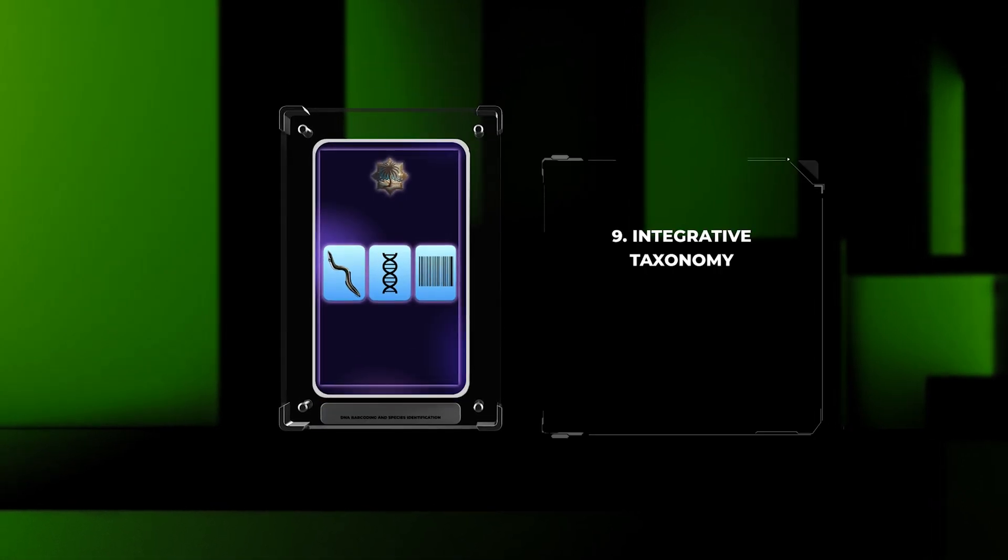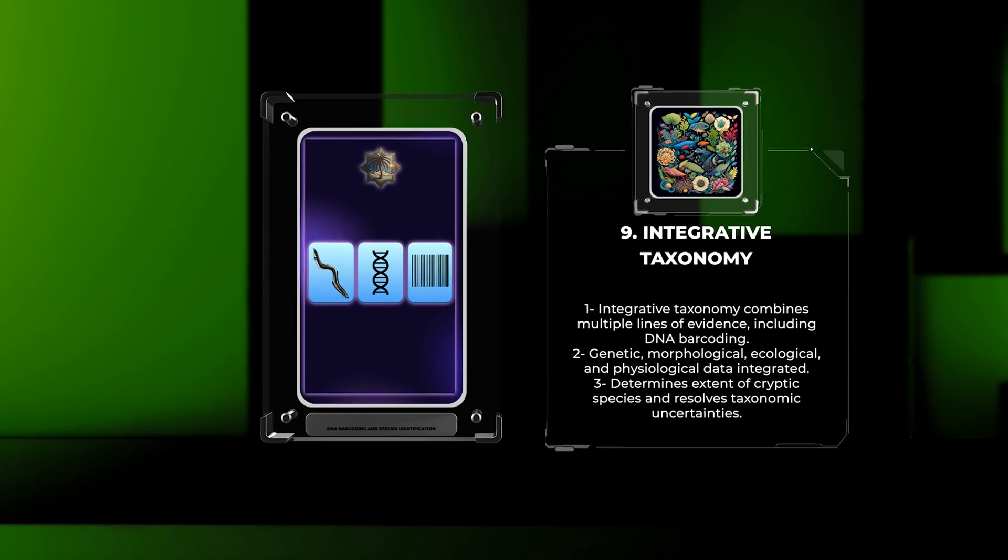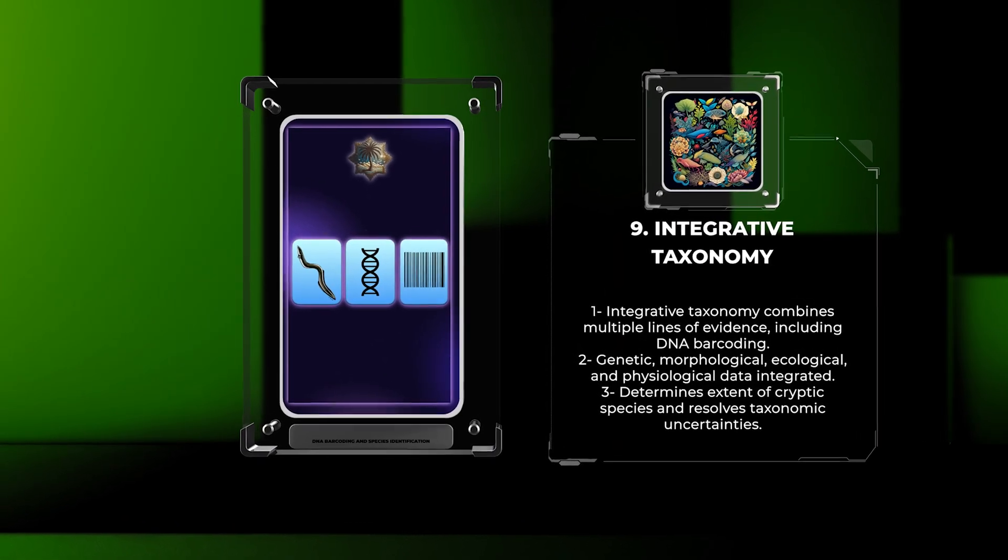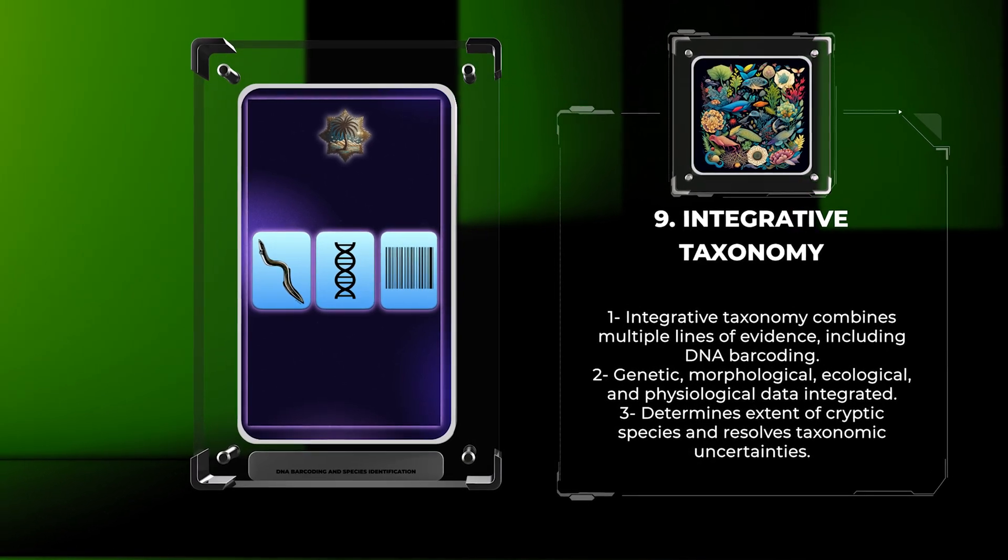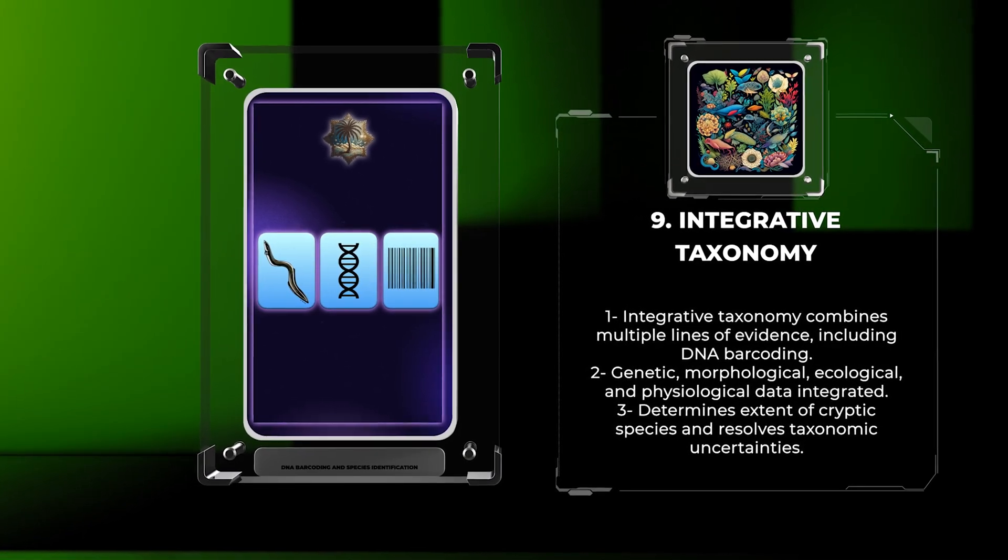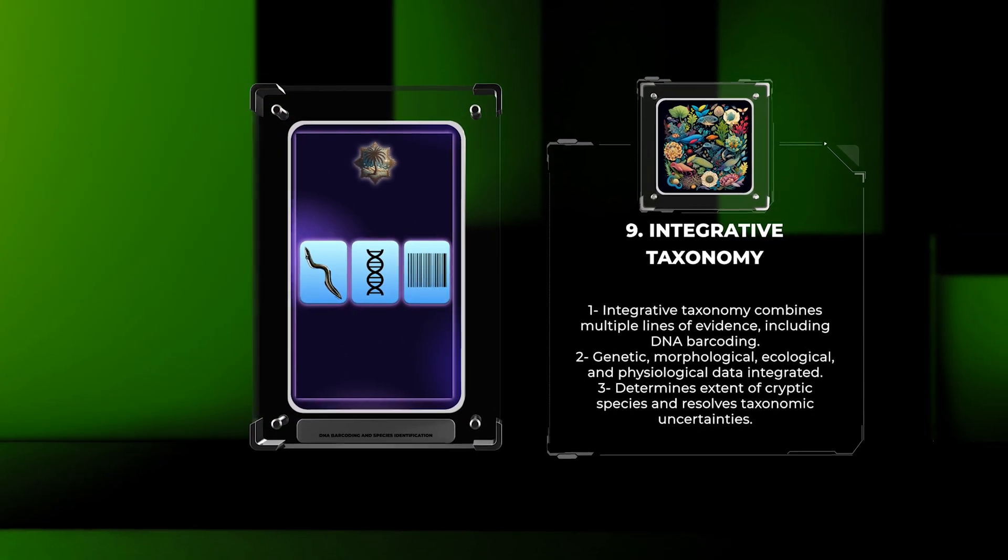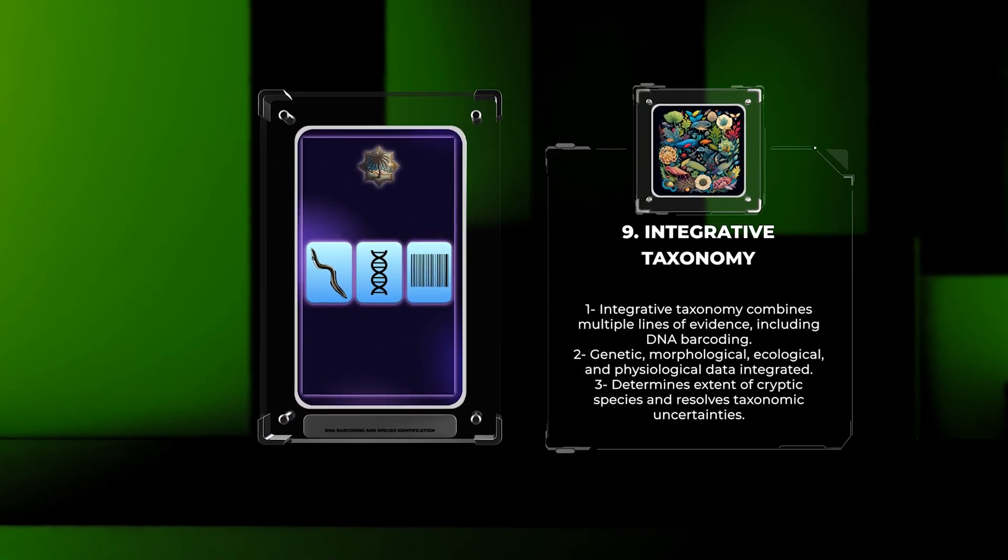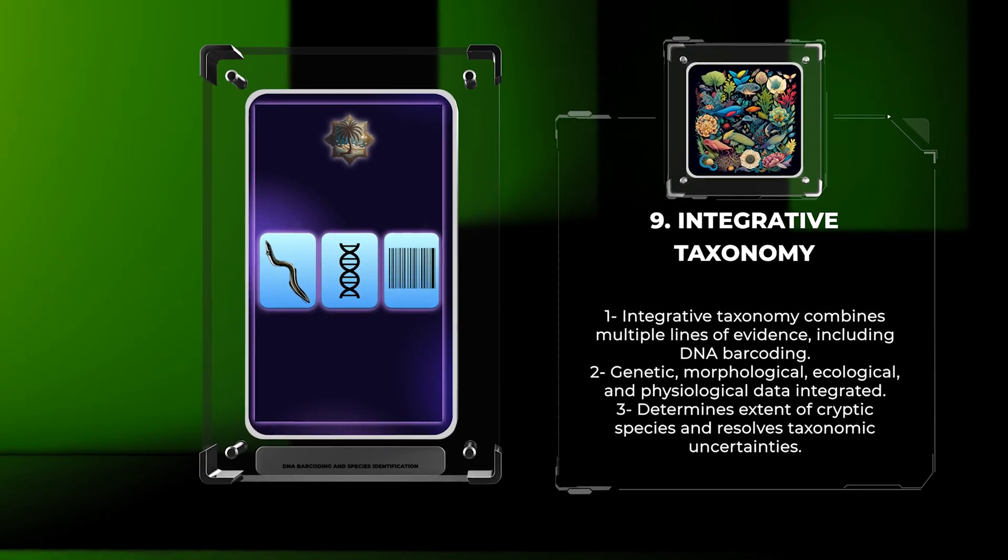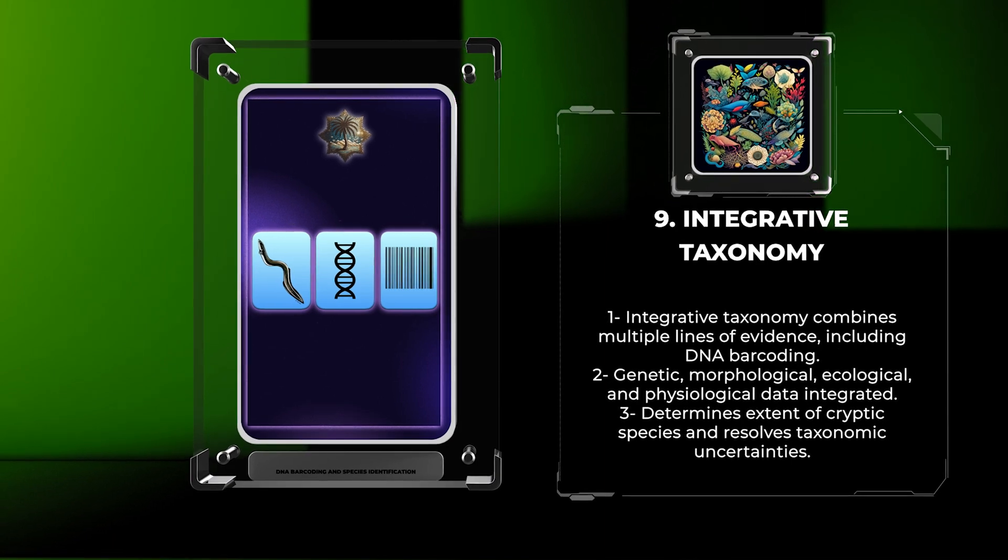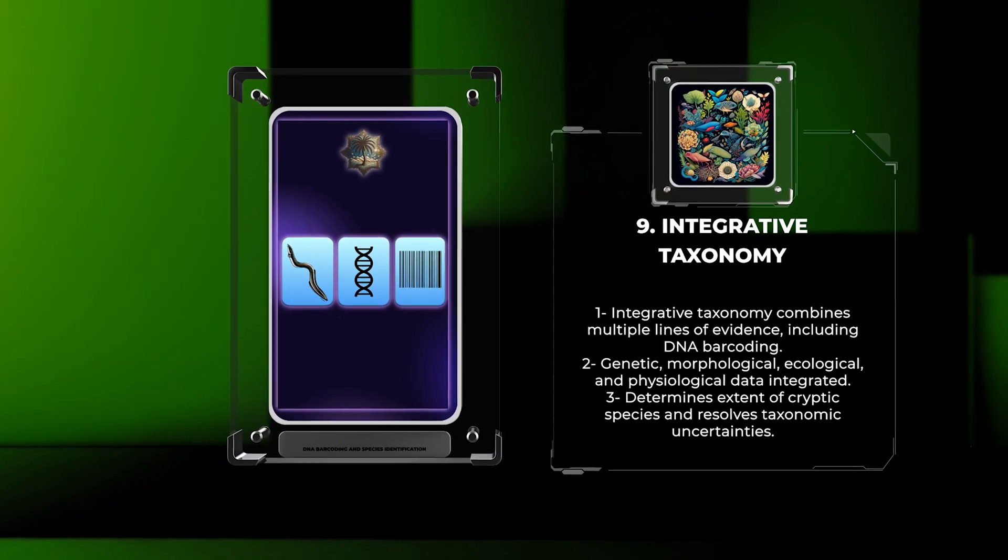Integrative taxonomy aims to combine multiple lines of evidence, including DNA barcoding, to improve species identification accuracy. It involves integrating genetic, morphological, ecological, and physiological data to gain a comprehensive understanding of species boundaries. By using different data types, scientists can determine the extent of cryptic species, assess hybridization events, and resolve taxonomic uncertainties. Integrative taxonomy enhances our ability to accurately classify and recognize species, especially in challenging taxonomic groups.